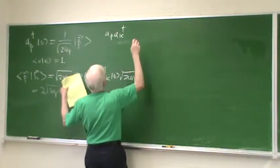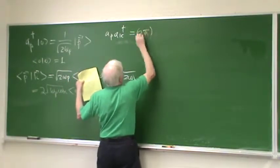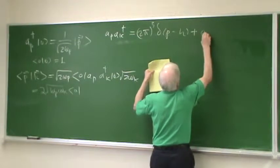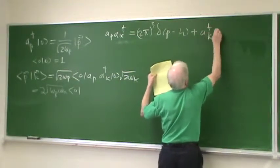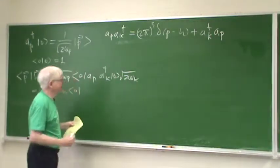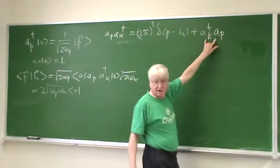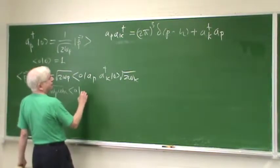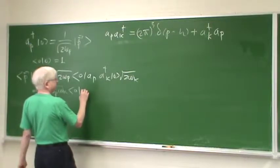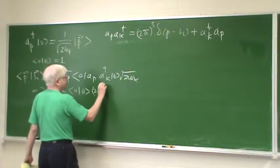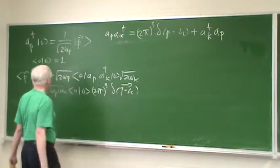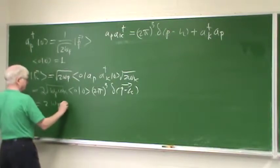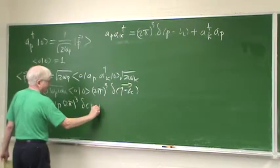So this thing is 2 times the square root of omega-p times omega-k, times the vacuum. Now we know what this commutator is — well, it's not a commutator, it's a product. Because we know that the commutator of a(p), a-dagger(k) is the delta function. And in Schwartz's normalization, it's (2π)^3 delta(p − k), plus a(p) a-dagger(k) a(p). That between two vacuum states gives zero. So what we have is simply vacuum times vacuum, which is 1, times (2π)^3 delta(p − k).